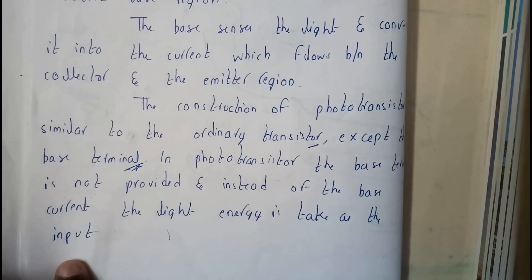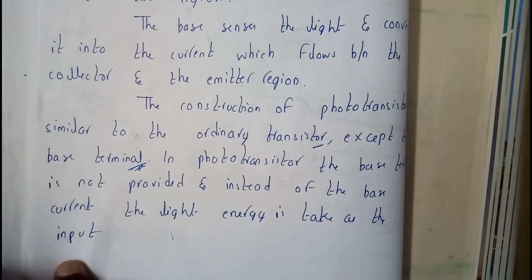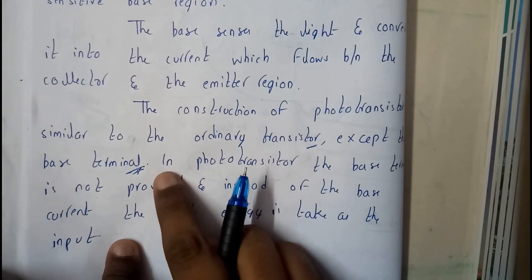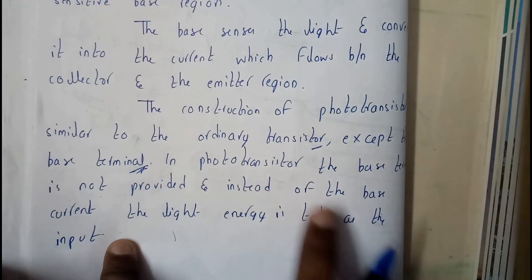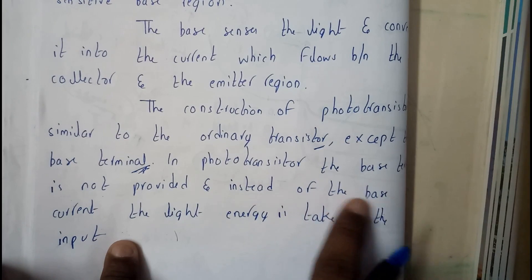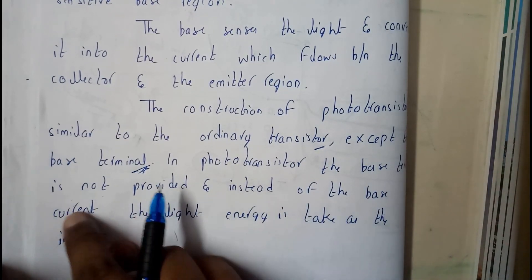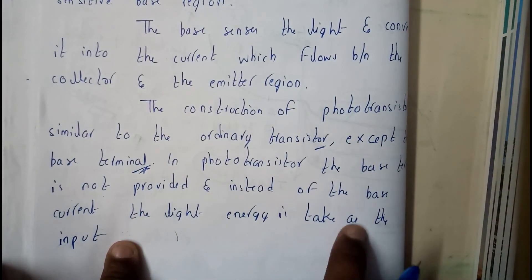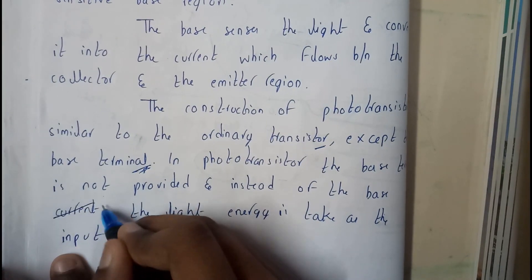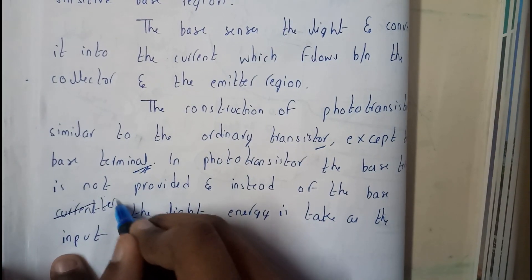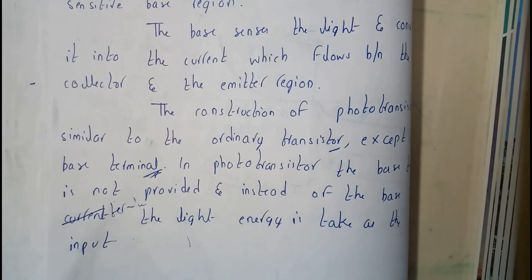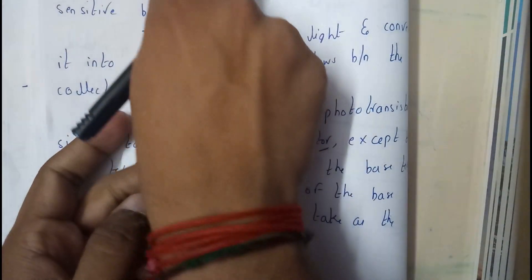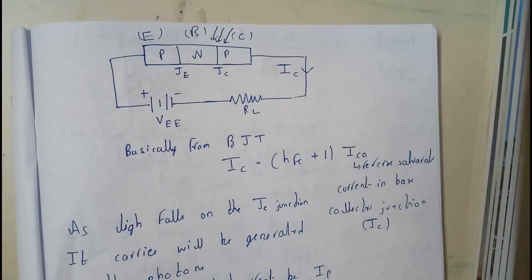This is an important point to remember: in a photo transistor, the base terminal is not provided. Instead of the base current, light energy is taken as the input at that location.